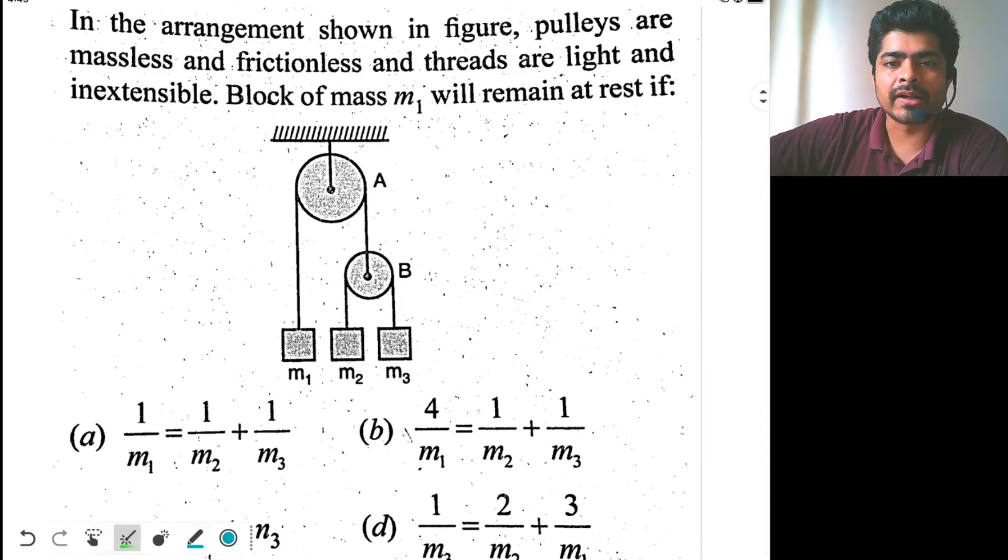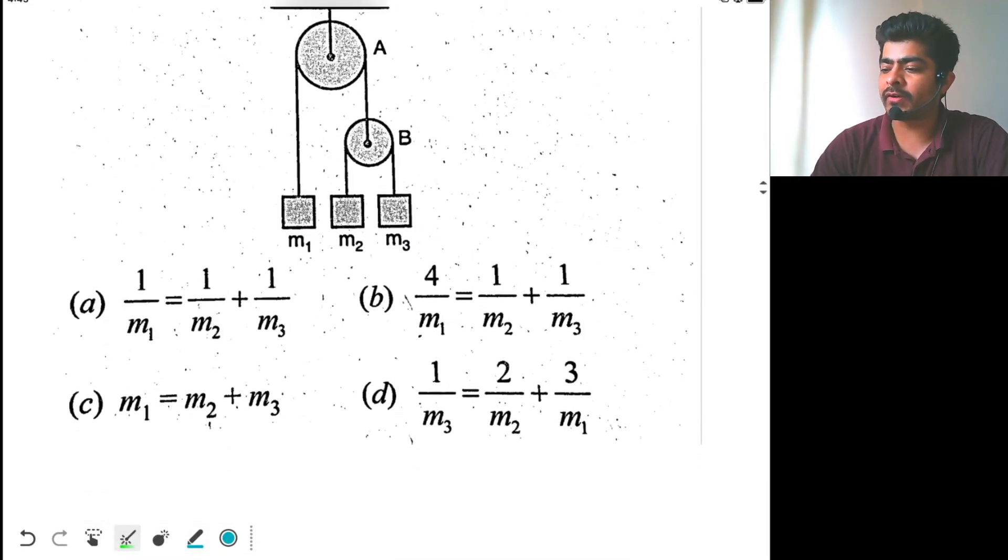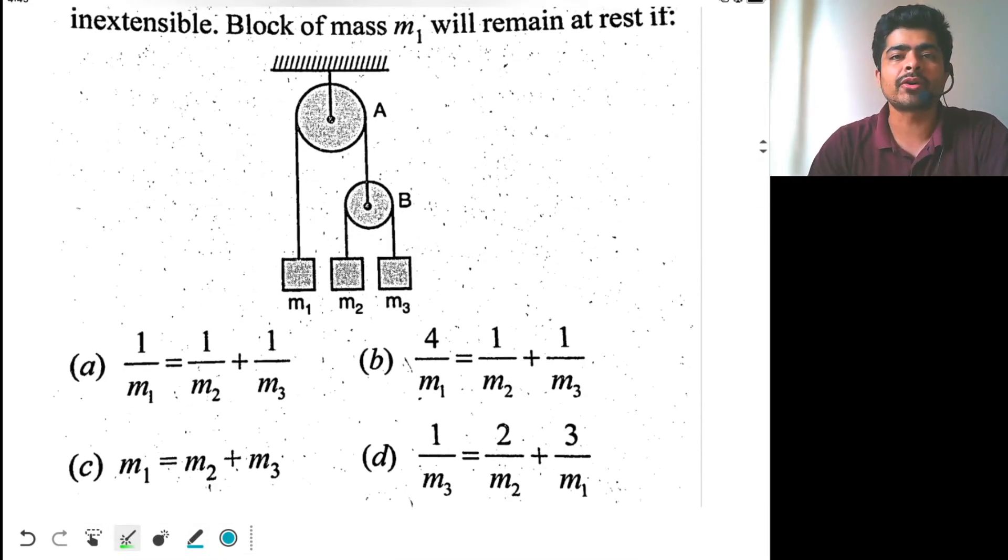Okay, now see this question. In the arrangement shown in figure, pulleys are massless and frictionless, and the threads are light and inextensible. Block of mass m1 will remain at rest if - so this block should remain at rest while these two blocks can move. What is the condition for that? Four options are given, we have to identify which condition will come out to be true. This question is in fact very easy.